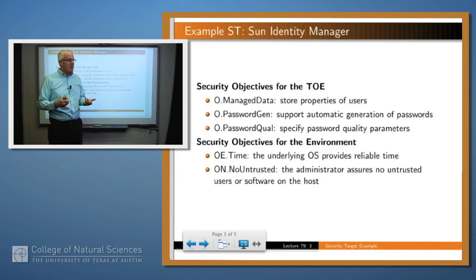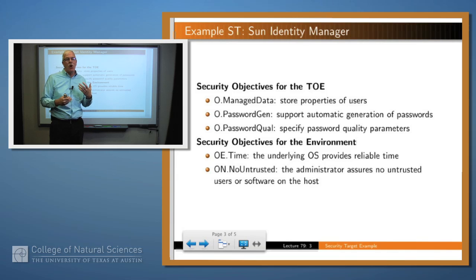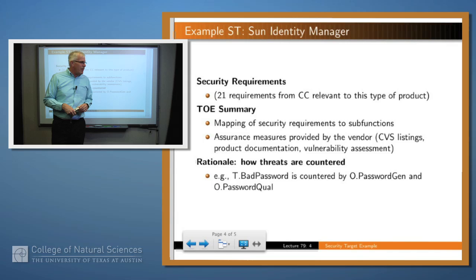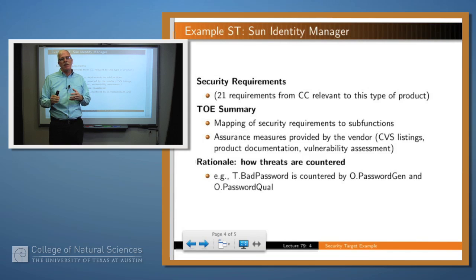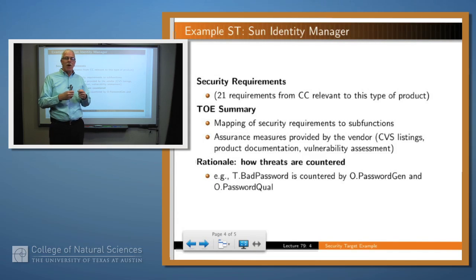There were also some security objectives for the environment: you had to have a good timestamp mechanism, and there had to be mechanisms in place to guarantee that no one logged into the system who wasn't allowed to. Then there were a set of security requirements — not enumerated here but there were about 21 of them — annotated with sections from the Common Criteria Manual specifying the kinds of requirements needed for this system.